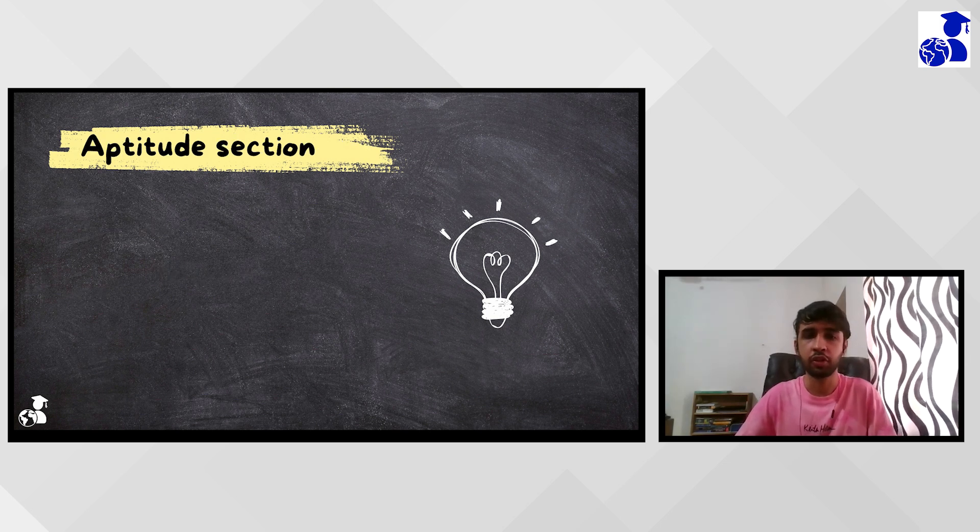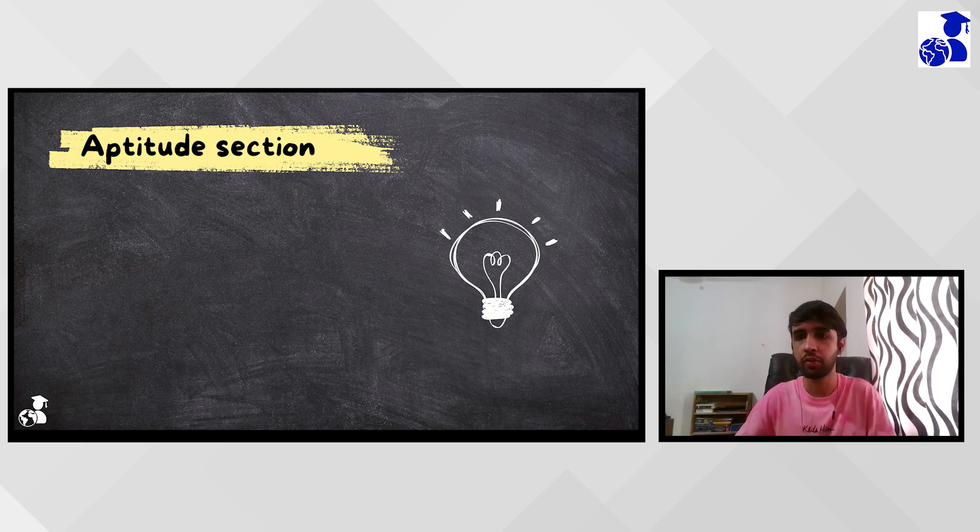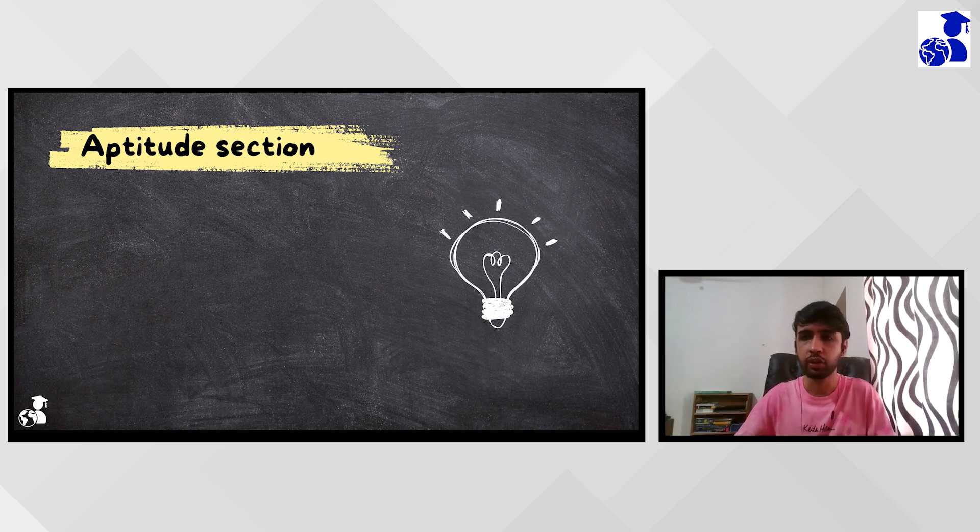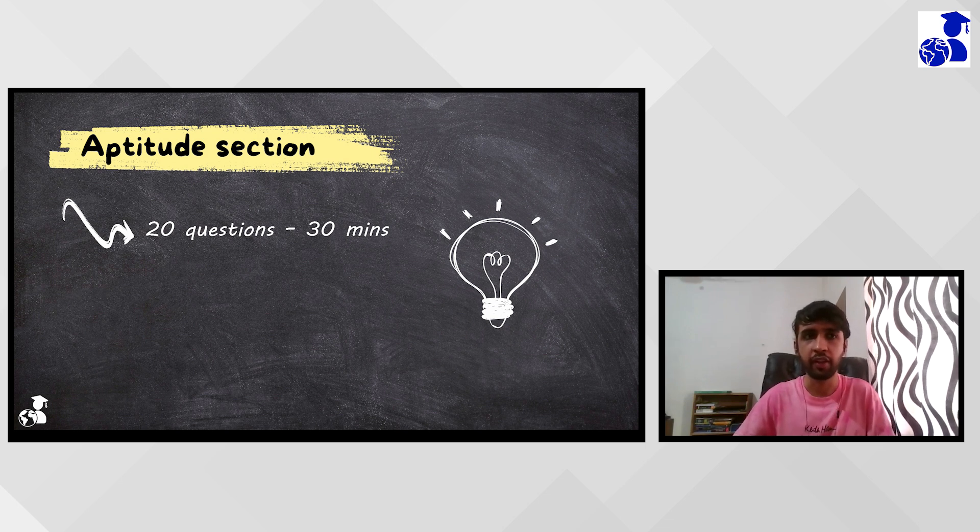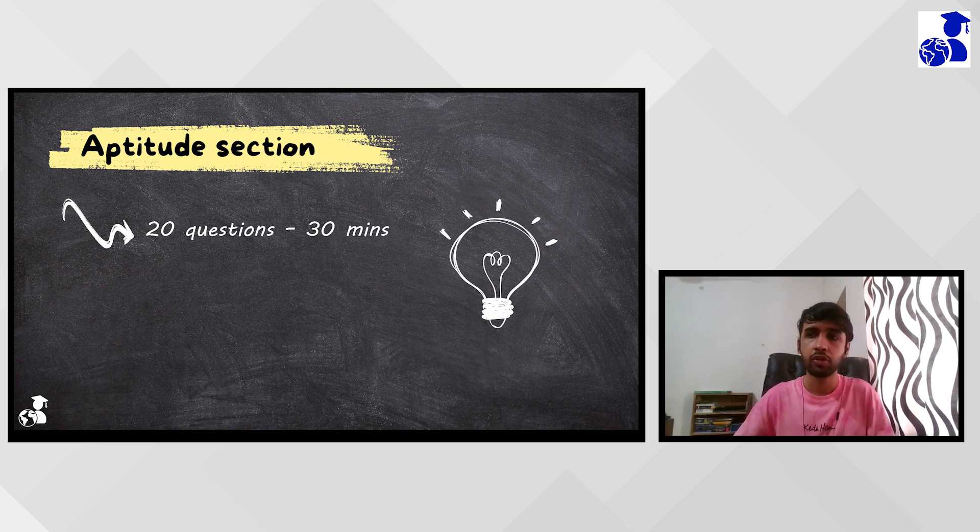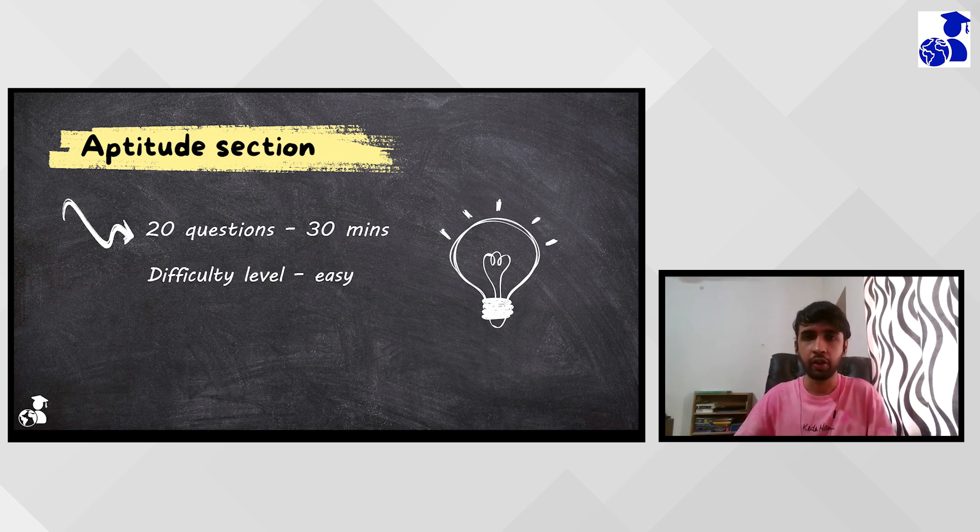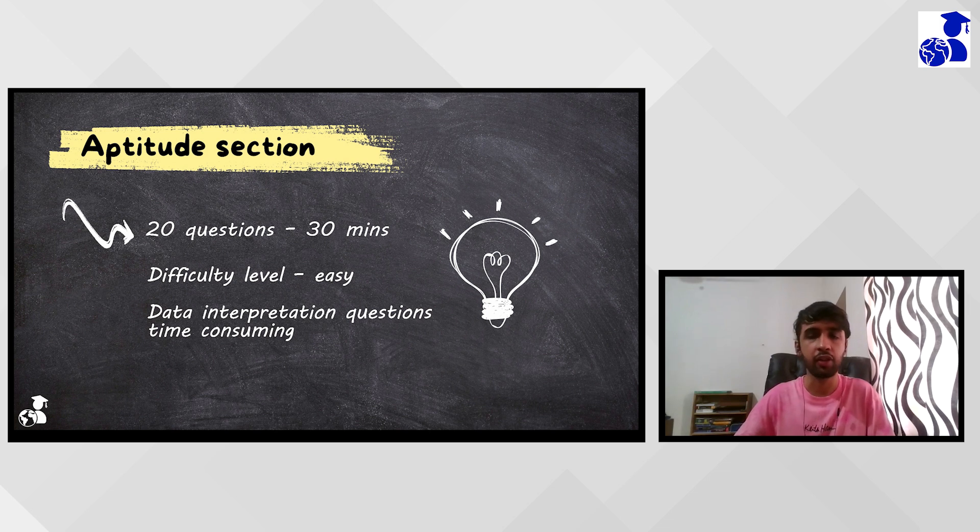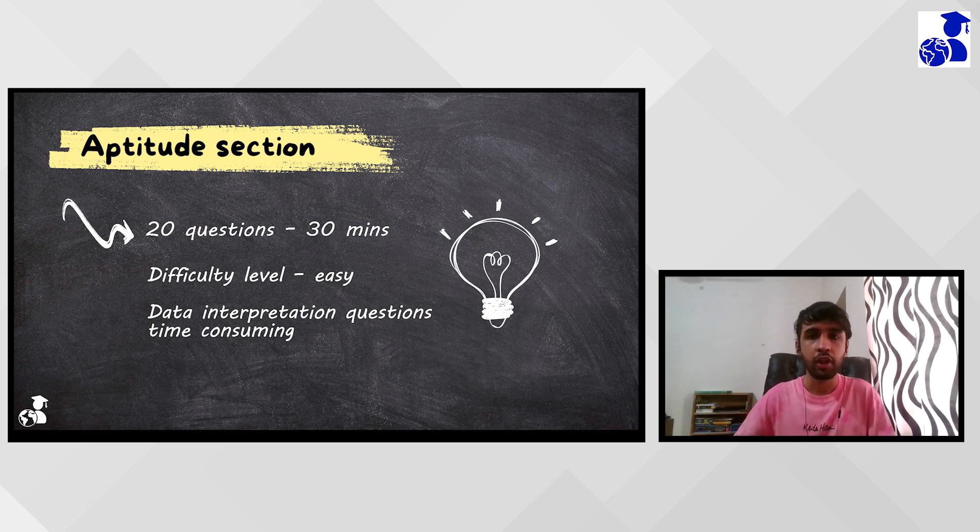So the first portion was the written test. The written test was divided into three sections. First we will come to section A, which was the aptitude section, which had 20 questions and we were given 30 minutes to attempt the whole section. So in terms of difficulty level, the questions were quite easy, but there was really less time allotted as they were data interpretation questions, which took quite a lot of time in understanding those questions. So overall, I would like to say that the level of questions is easy, but speed is an important factor in this section.